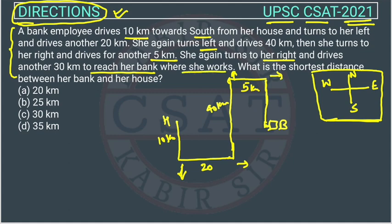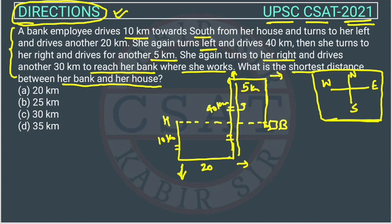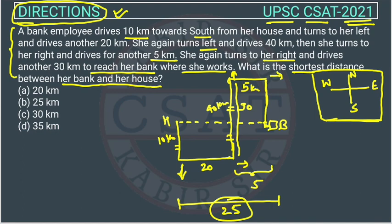Now, what is the shortest distance between her bank and her house? The shortest distance is the dotted line connecting them directly. The total vertical distance is 40 km minus 10 km, which is 30. The horizontal distance is 20 plus 5, which is 25 km. So the shortest distance equals 25 km, and the answer is option P. This was an easy question — you just have to draw the figure and you will get the answer.